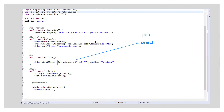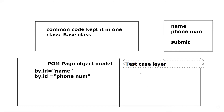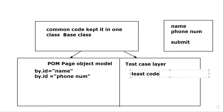So we reduced the common code by keeping it in a base class, and we kept the element locators in POMs. Now the next thing is the test case layer — this is where I write all the test case classes. Now how do I maintain these three things? My test case will use the common code, and the common code will be used by my POM too. So I can make the base class the parent of both POM and the test layer. The concept of inheritance means the child can use all the properties of the parent, so both can extend the base class. This results in least code in test cases and least dependency.